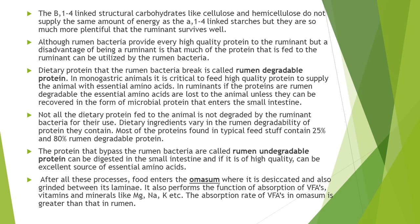However, there is also a disadvantage of being a ruminant: much of the protein fed to the ruminant can be utilized by the rumen bacteria, because they find it energetically more efficient to use preformed amino acids rather than making their own. The dietary proteins that rumen bacteria can break down are called rumen degradable proteins. If a protein is rumen degradable, then essential amino acids are lost to the animal unless recovered in the form of microbial protein entering the small intestine. The rumen degradability of protein varies from protein to protein.